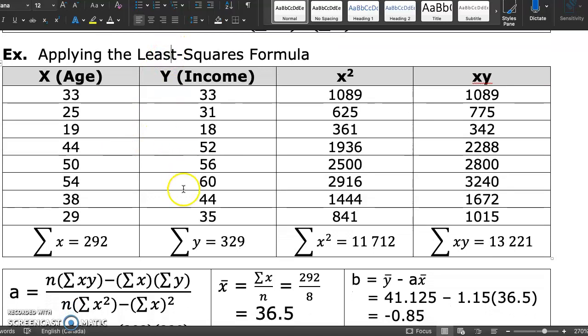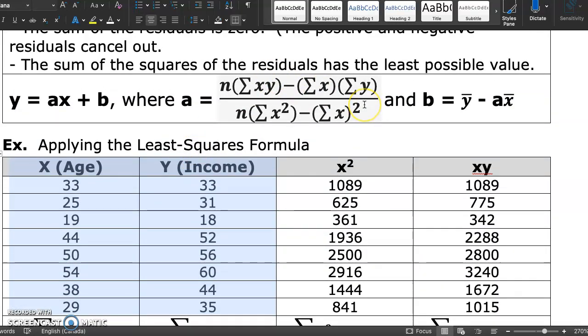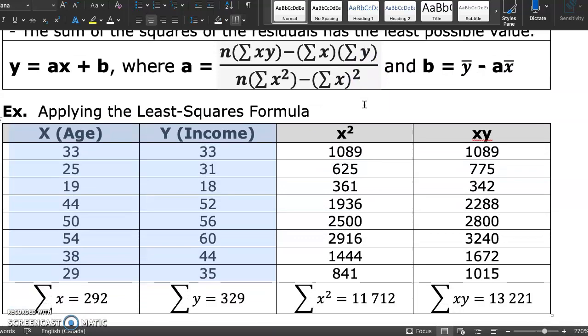Applying the least squares formula. If we have our data set, you'll always be given this formula. What you would want to do is look at which values are necessary within this formula. We need to have the following inputs: we need x squared, so we'll take the x squared of each of these, so 33 squared is 1089, as well as we need the product of x and y. n represents the number of data points, and remember this is an ordered pair, so there should be 1, 2, 3, 4, 5, 6, 7, 8. 8 is the value of n.